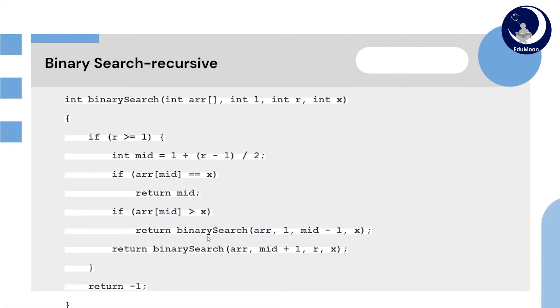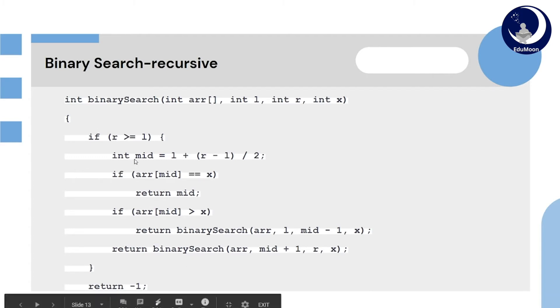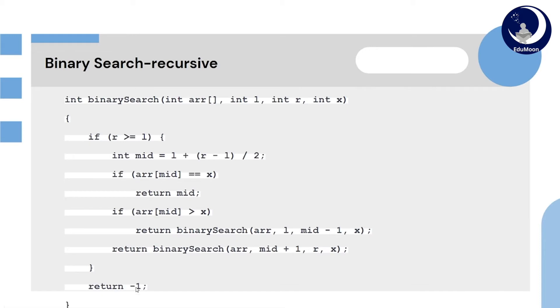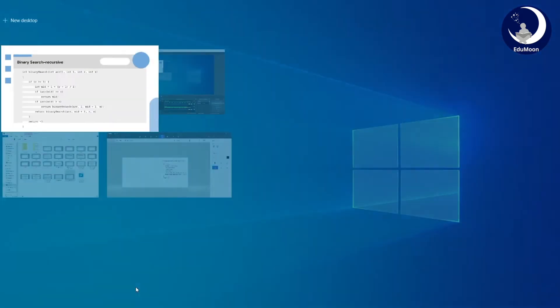We will see with an example. If this entire case does not work — that is, if r is less than l — then it will return minus 1, indicating item not found.